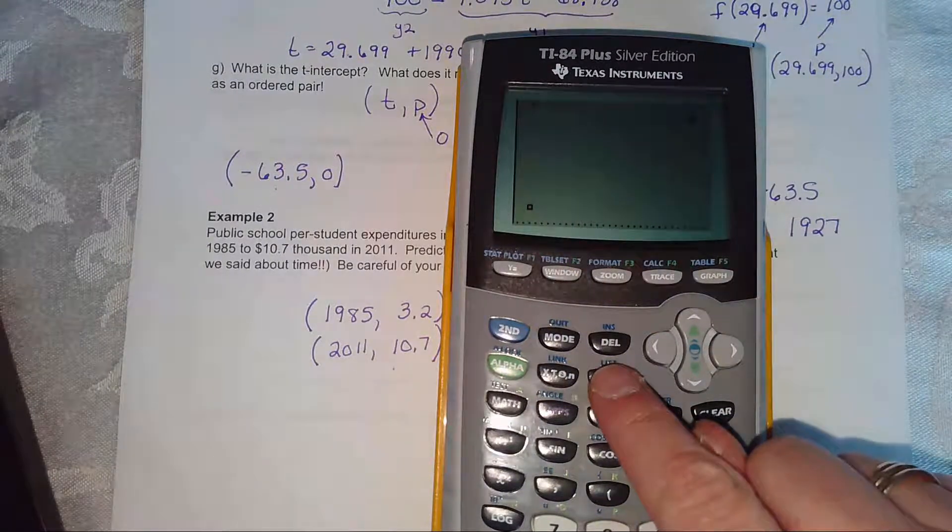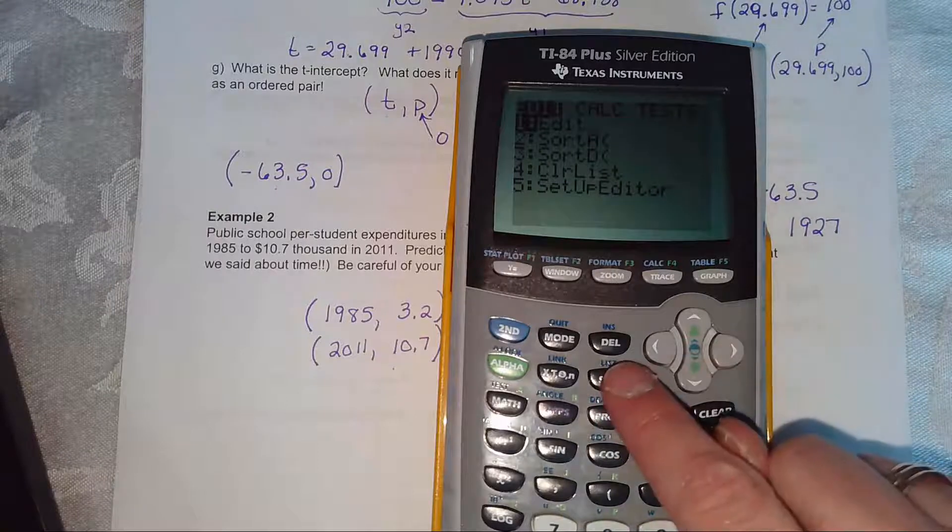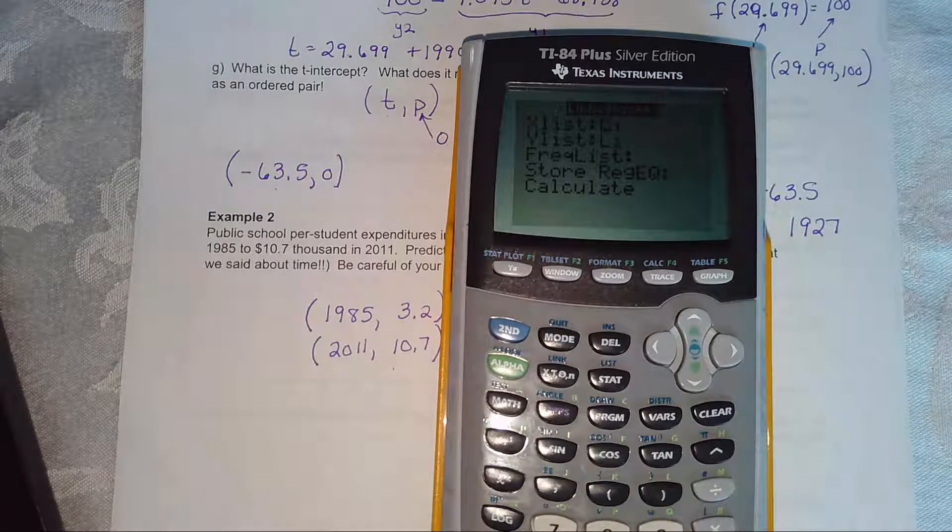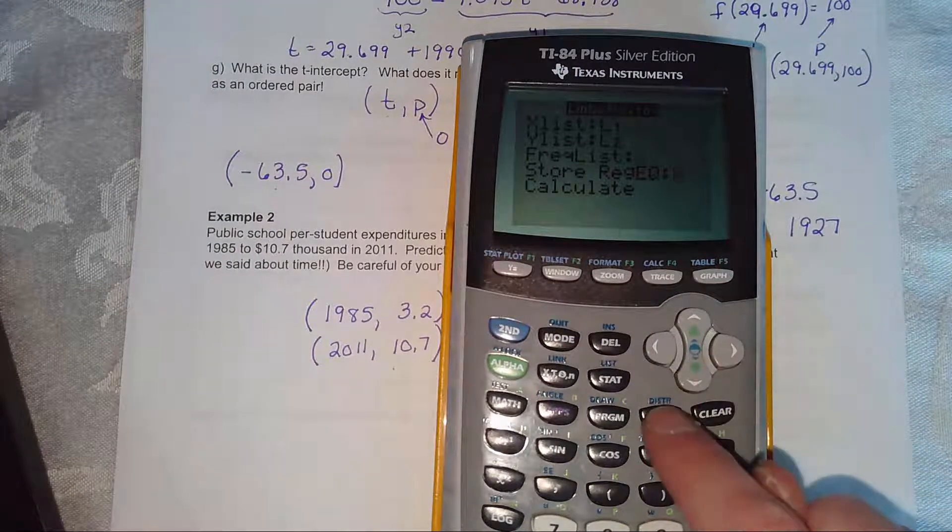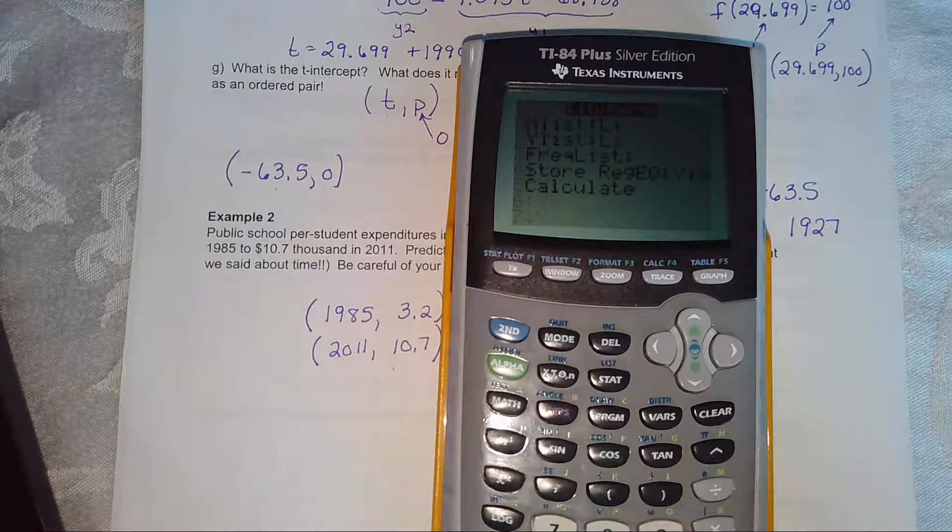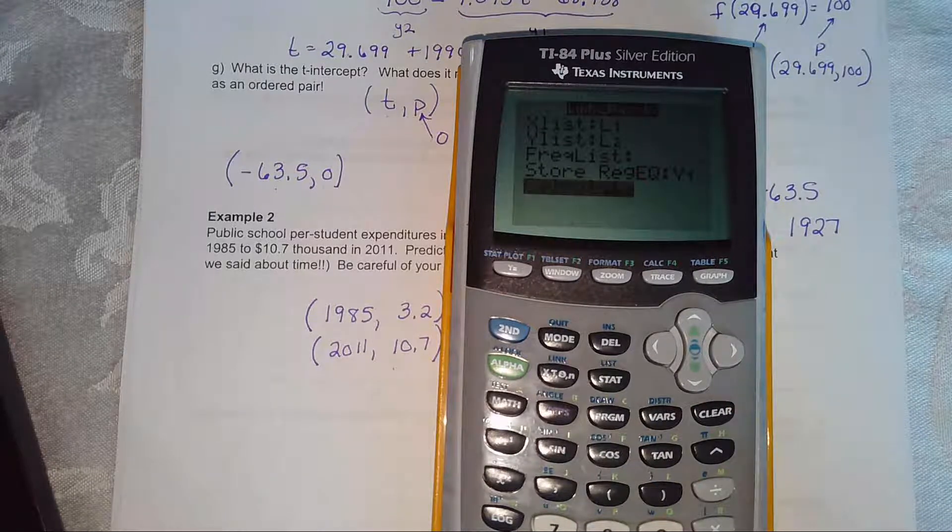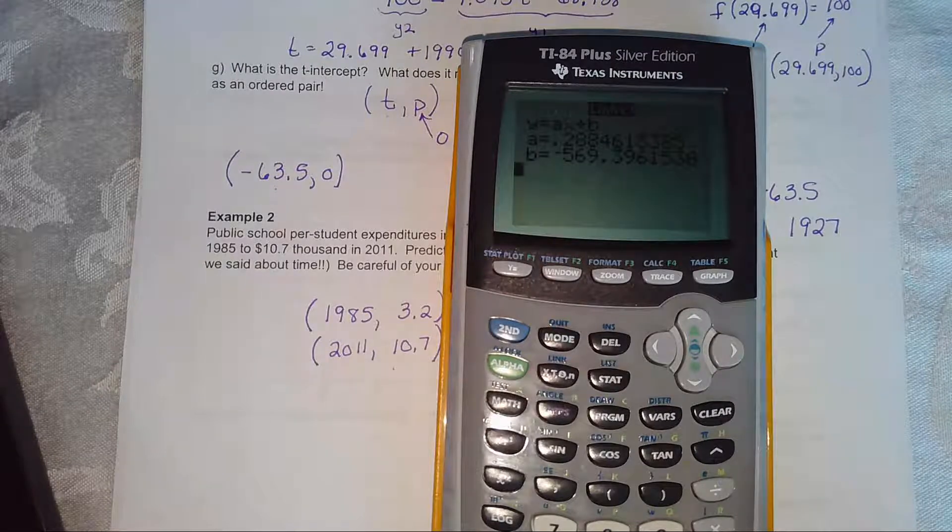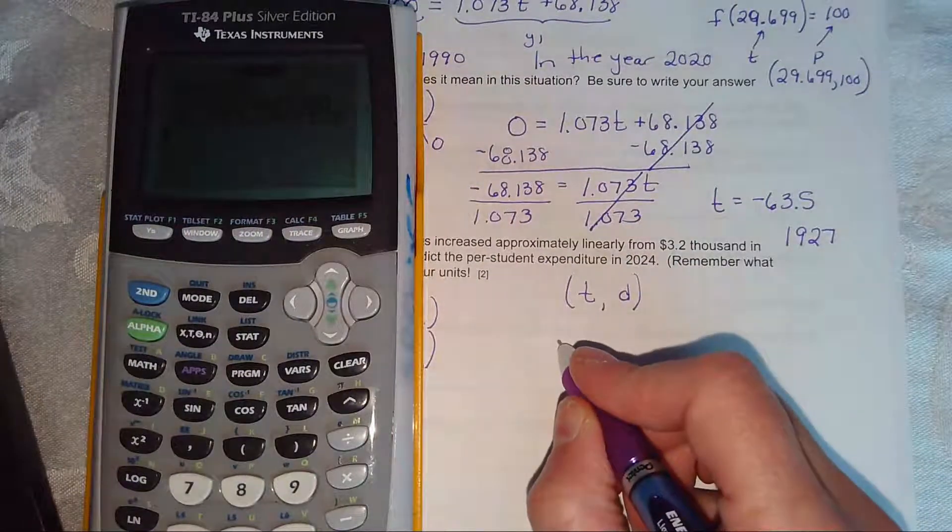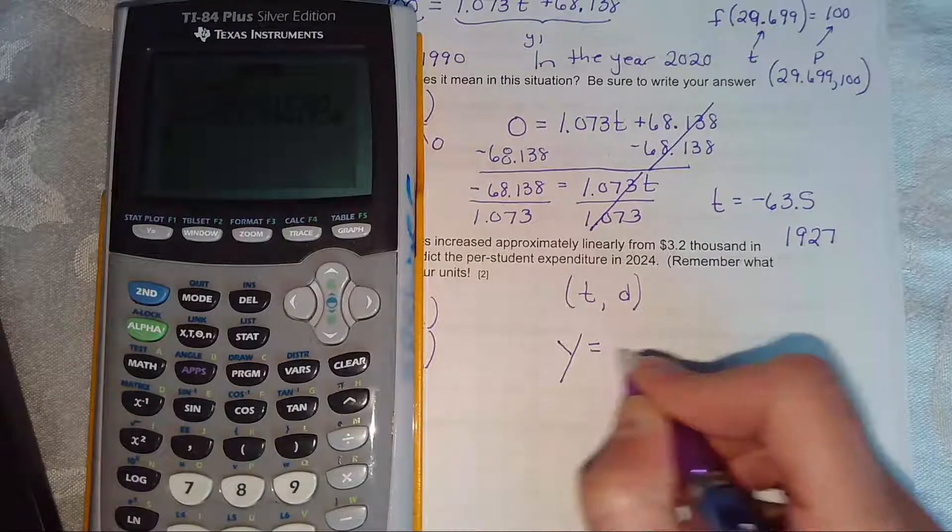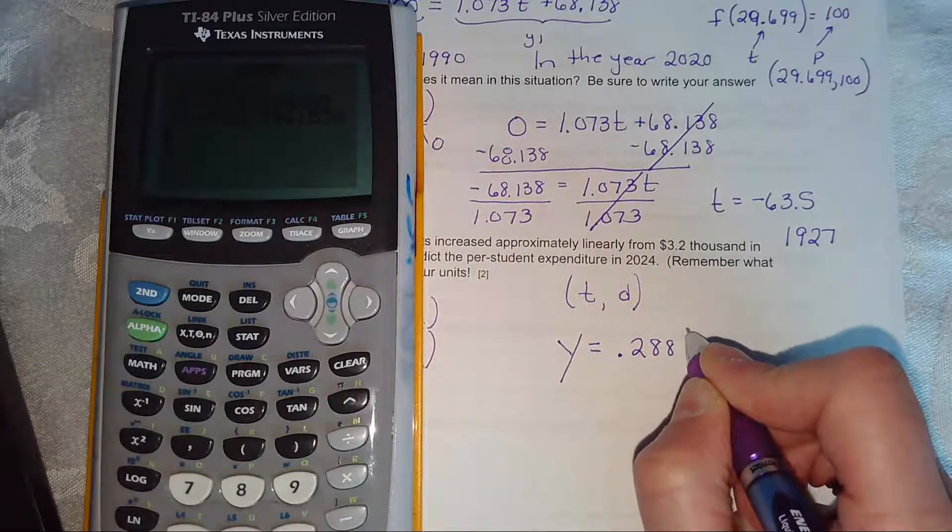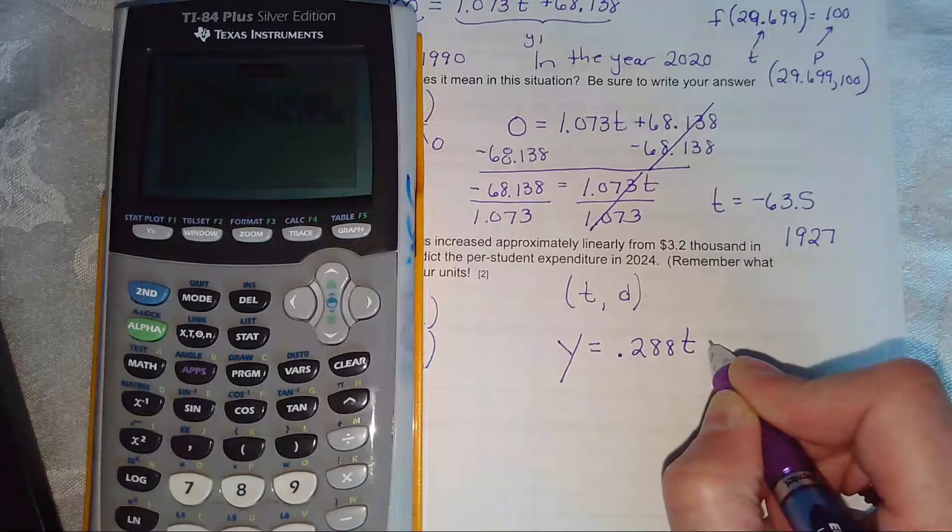To tell the calculator to make a stat plot, we turn a plot on. And then we hit zoom nine. So there's our two points. To have the calculator make a linear regression, we go to stat, calc, option four. I'm going to have the calculator store it in yVars. You don't have to do that. You could just write it down and round it.